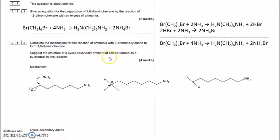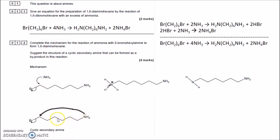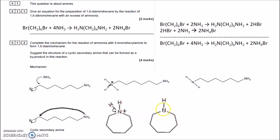Suggest a structure of a cyclic secondary amine that can be formed as a by-product. Instead of an NH₃ attacking, the NH₂ at one end — which has a lone pair — bonds to the carbon at the other end. Counting the carbons: one, two, three, four, five, six. The N bonds to that sixth carbon, making a ring with six carbons. The NH₂ goes to NH⁺, then H breaks off, leaving NH — and that's your cyclic compound.